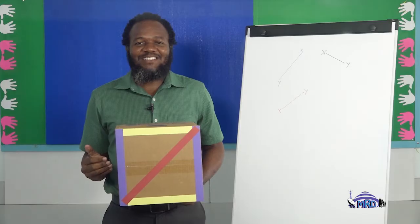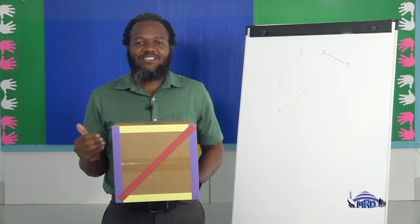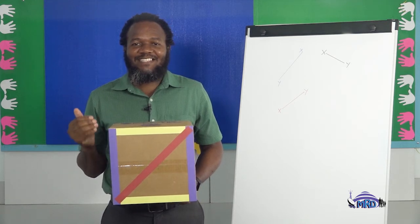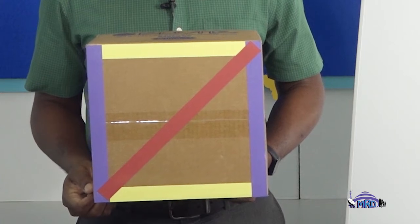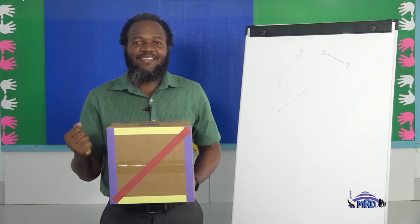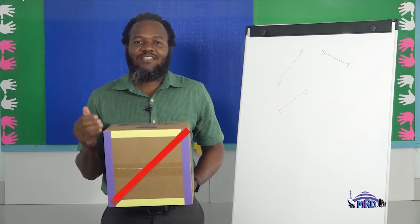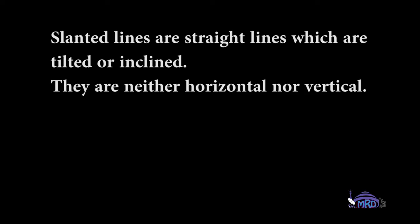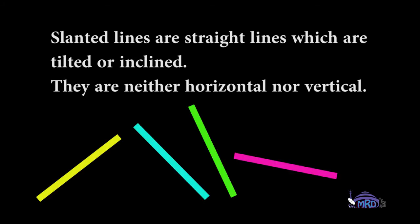Now I'm going to get my trusted favorite box. Can you tell me which line is slanted? If you chose the red line, then you are absolutely correct. Remember, slanted lines are straight lines which are tilted or inclined — they are neither horizontal nor vertical.